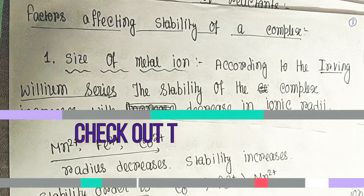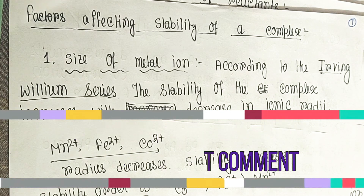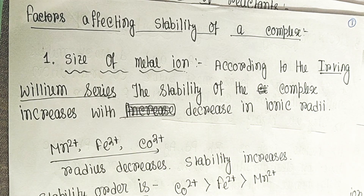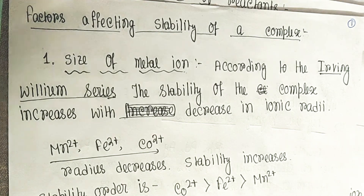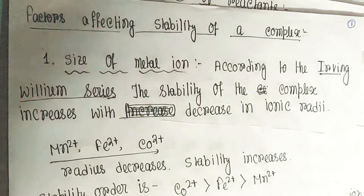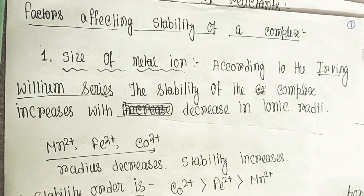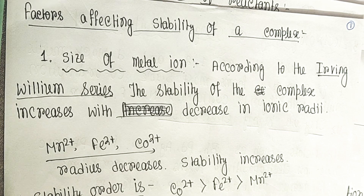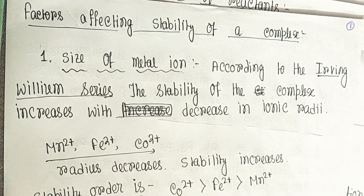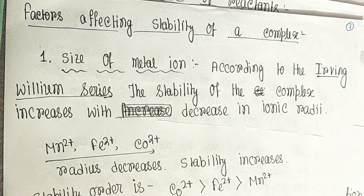Today our topic is the factors affecting the stability of a complex. We have reached the last part of coordination chemistry, and here we are discussing the factors that are affecting the stability of a complex. Some questions might come from this part. What are the main factors that affect, enhance, or decrease the stability of a coordinate complex?